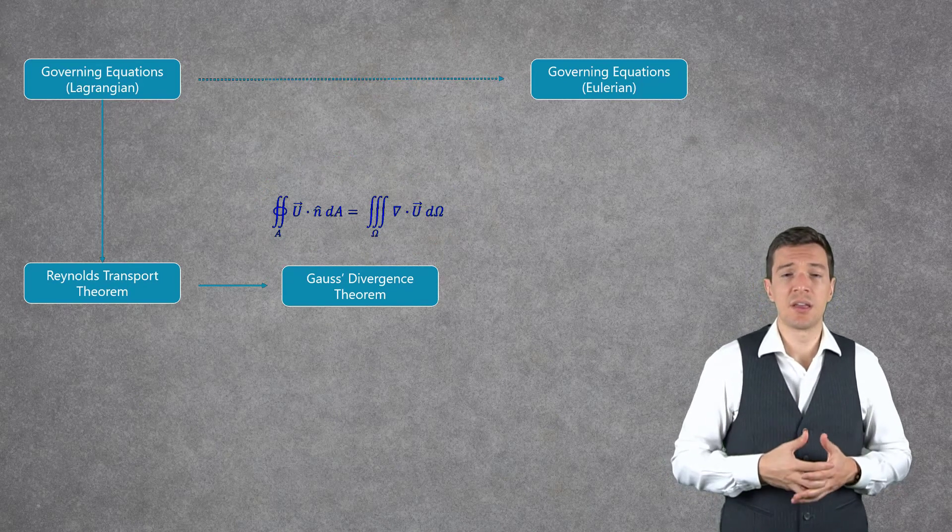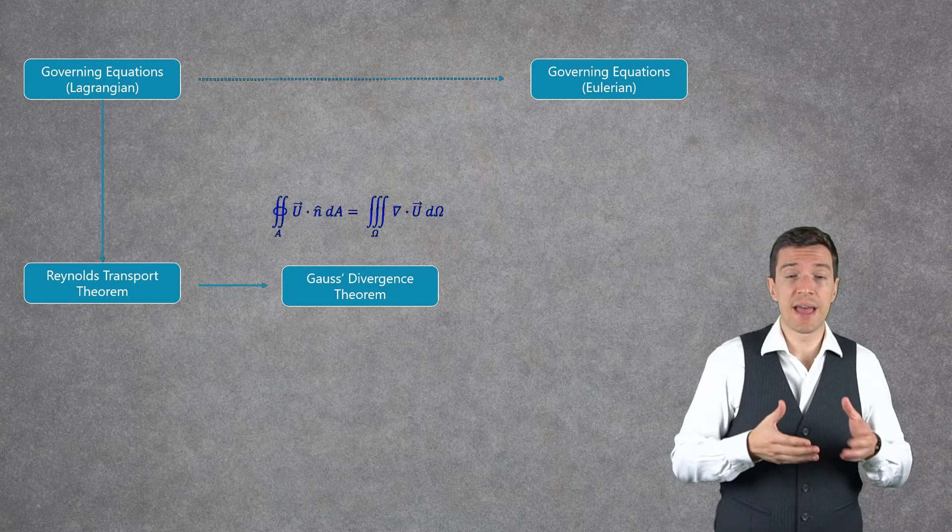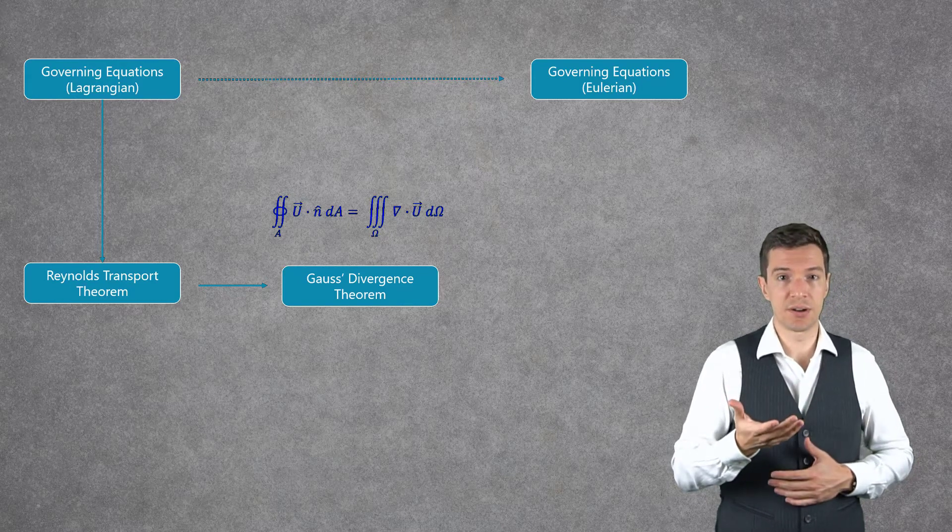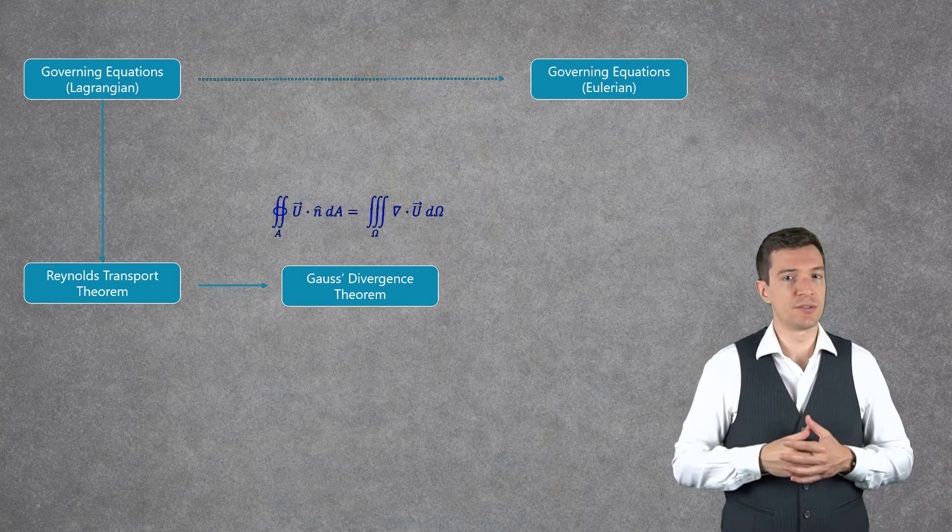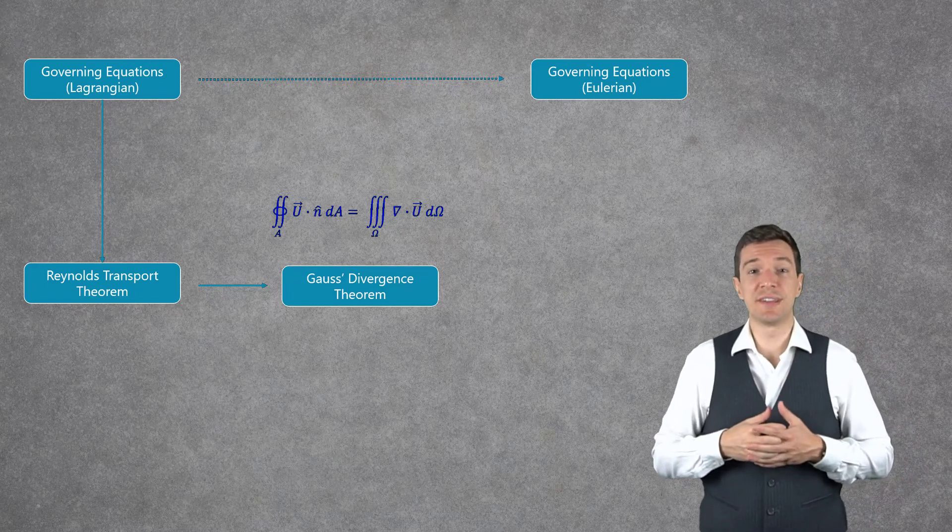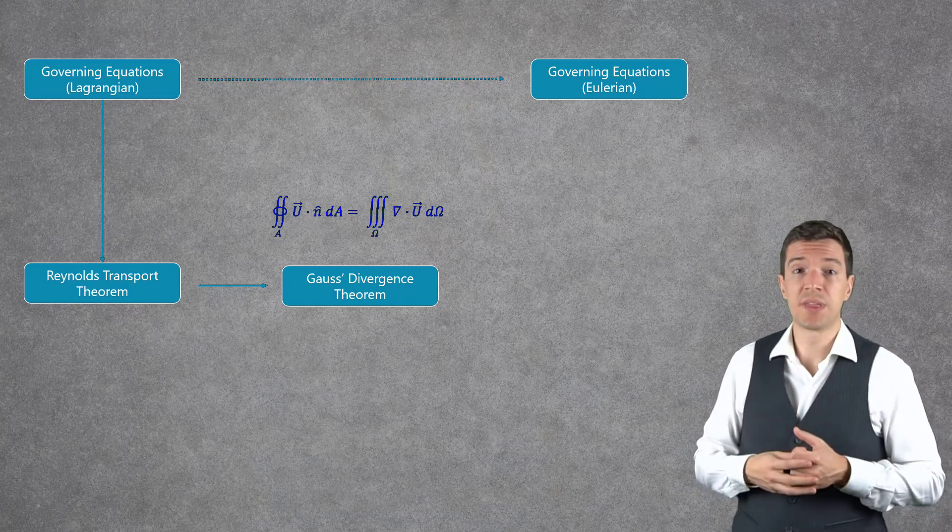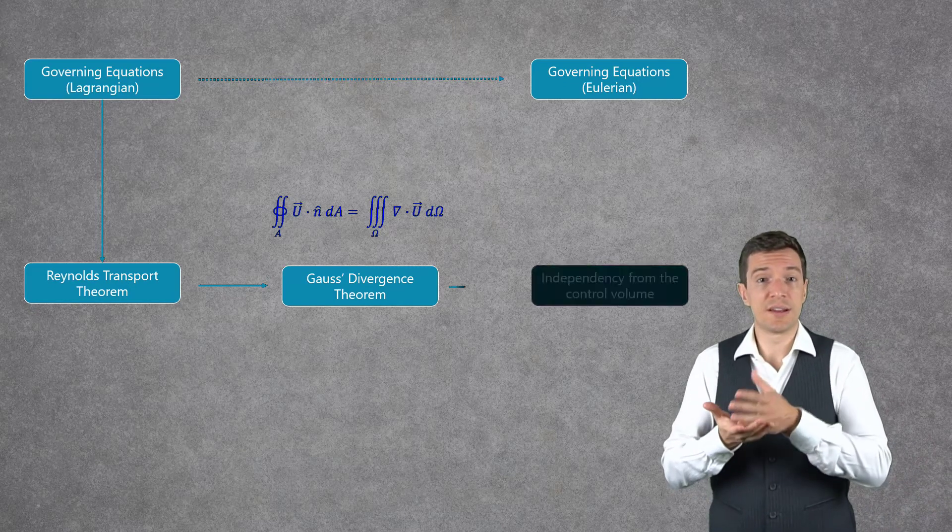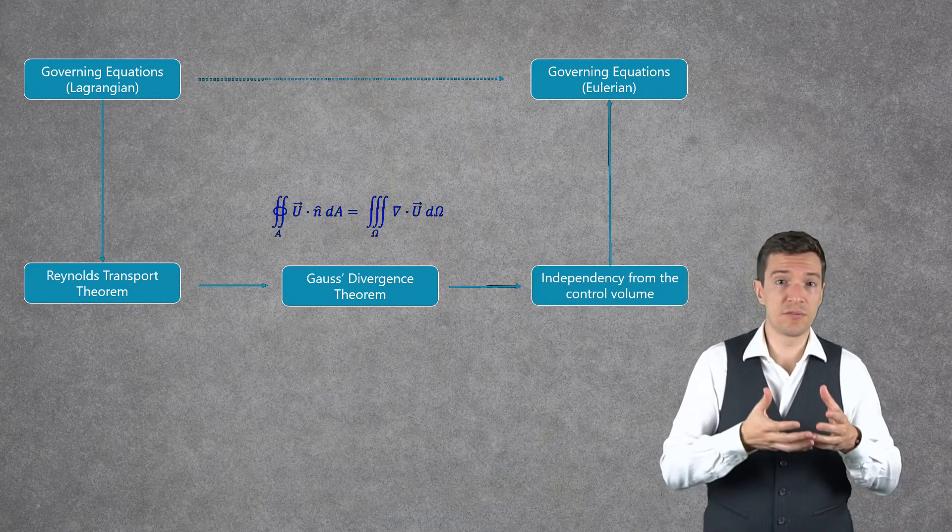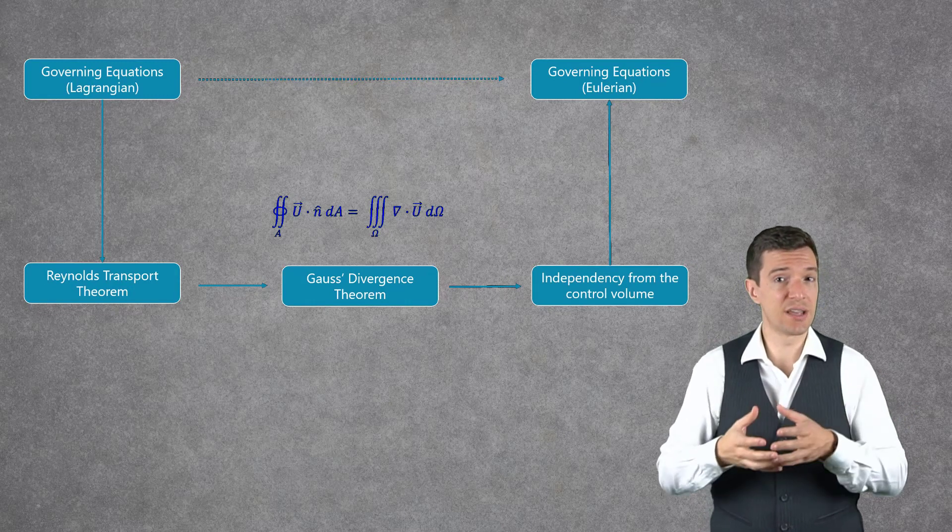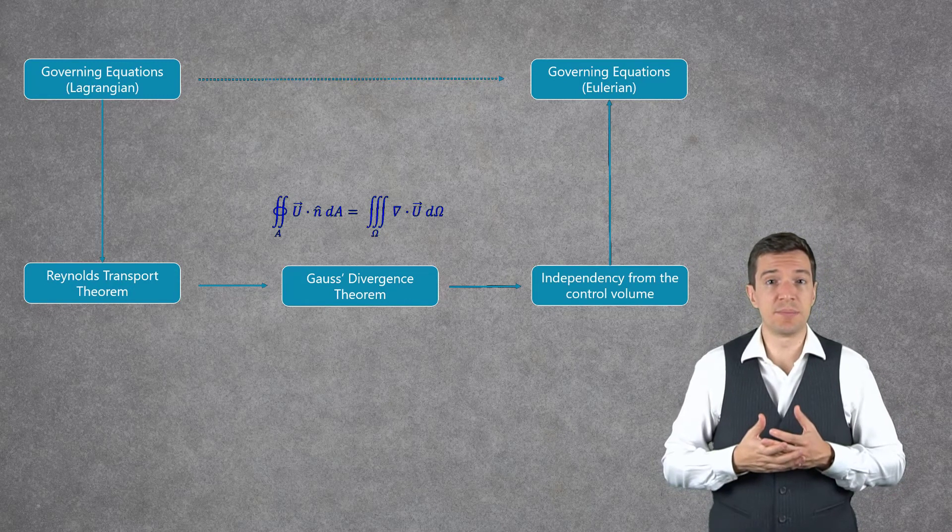For conciseness, we will refer to this as the Divergence Theorem for the rest of the course. Once we have the entire set of equations described into volume integrals, we can remove their dependency on the control volume size and shape. Removing this dependency, we get the governing equation in the Eulerian form.